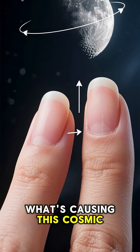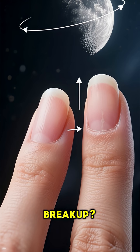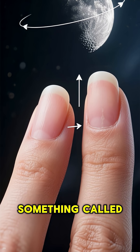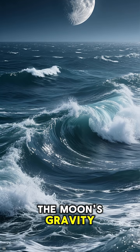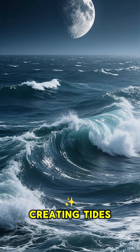So, what's causing this cosmic breakup? It's all thanks to something called tidal interaction. The Moon's gravity pulls on our oceans, creating tides.